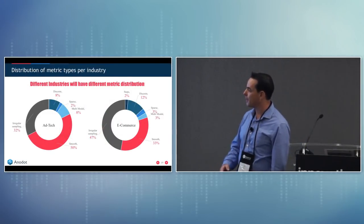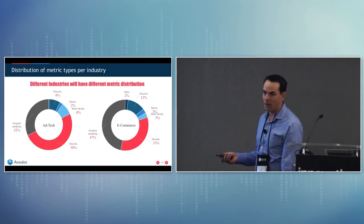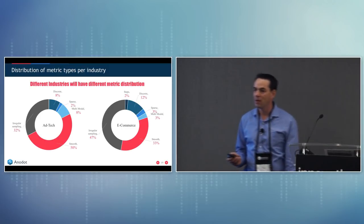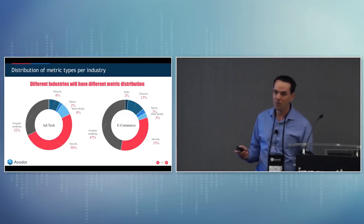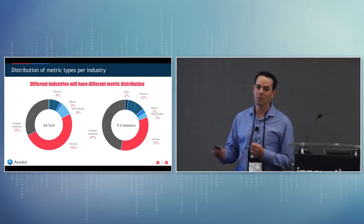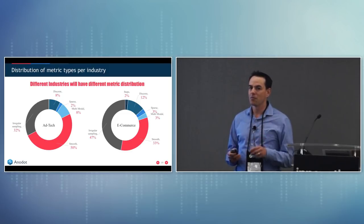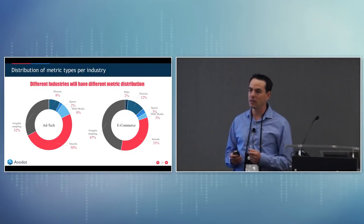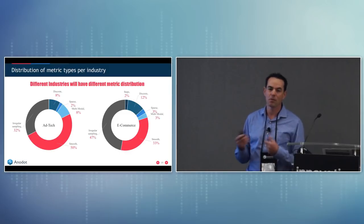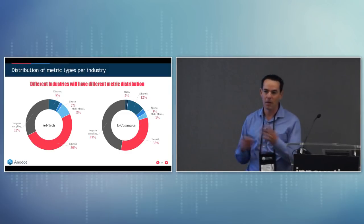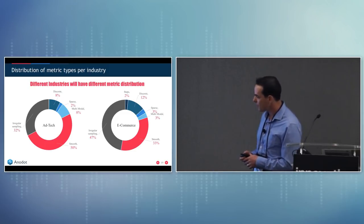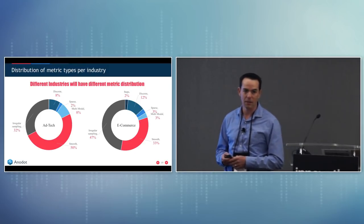Breaking this down by industry, it's interesting to see that in ad tech we have much more smooth, seasonal behavior than in e-commerce. In ad tech, campaigns run automatically, driving very regular click and impression patterns. In e-commerce, behavior is much more irregular because it's based on user behavior — people entering or not entering the website and what they do there. This was interesting to discover when we analyzed the data in our system.